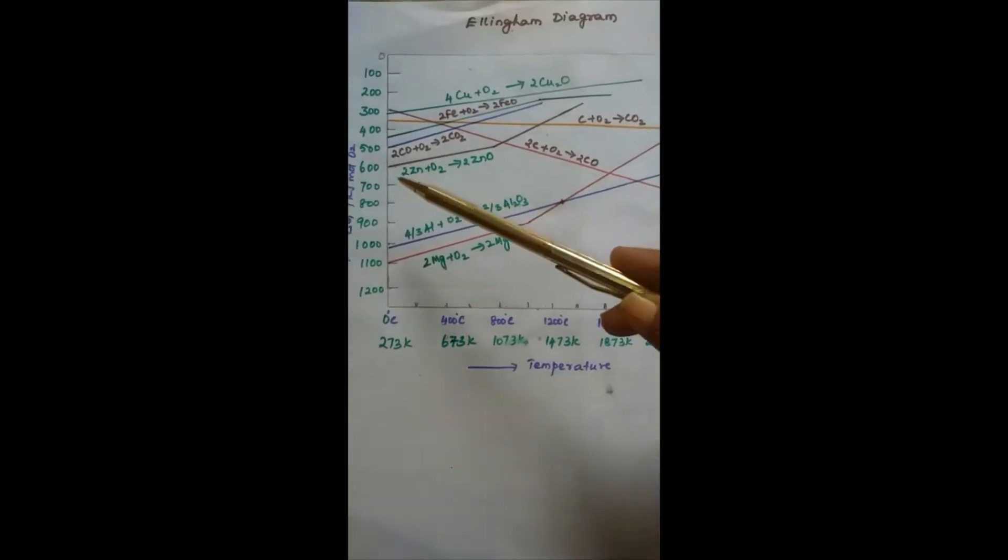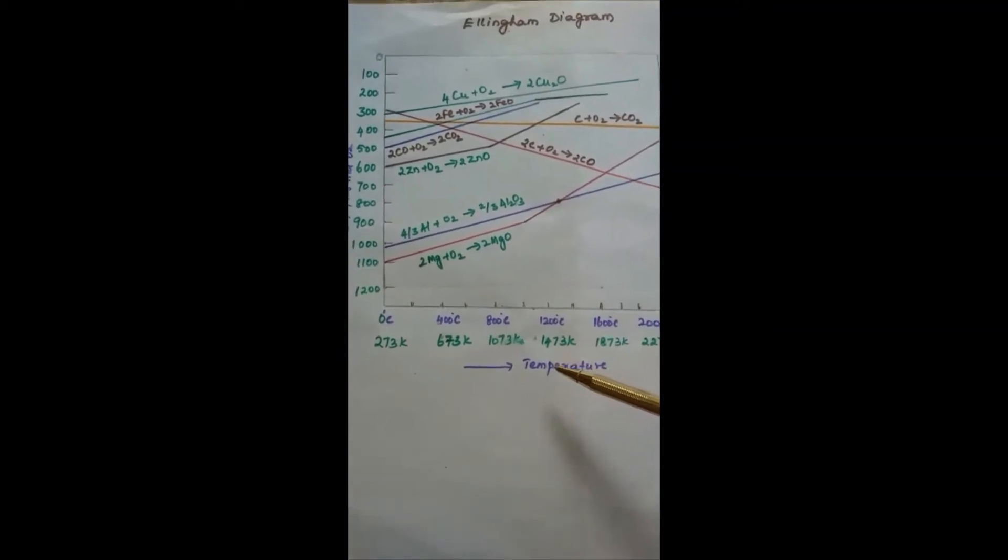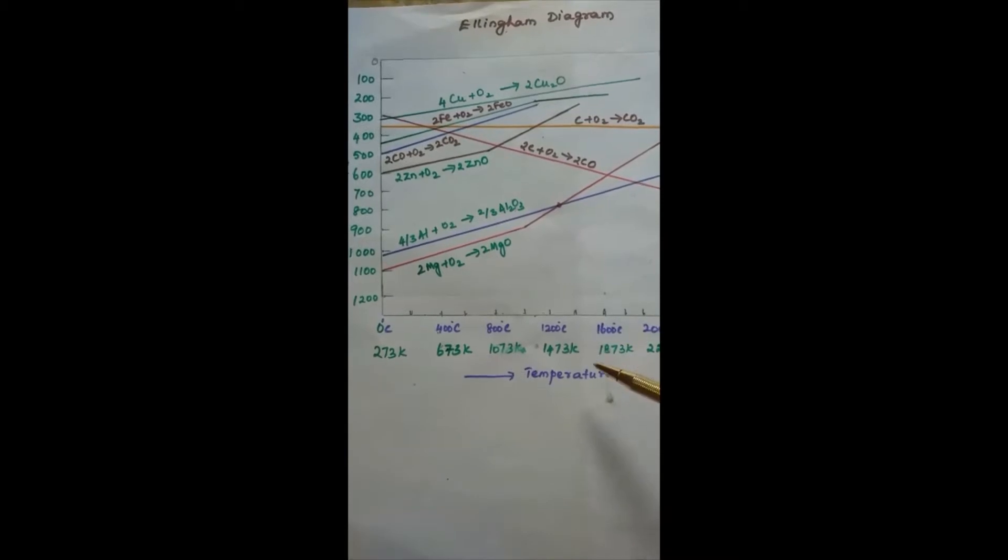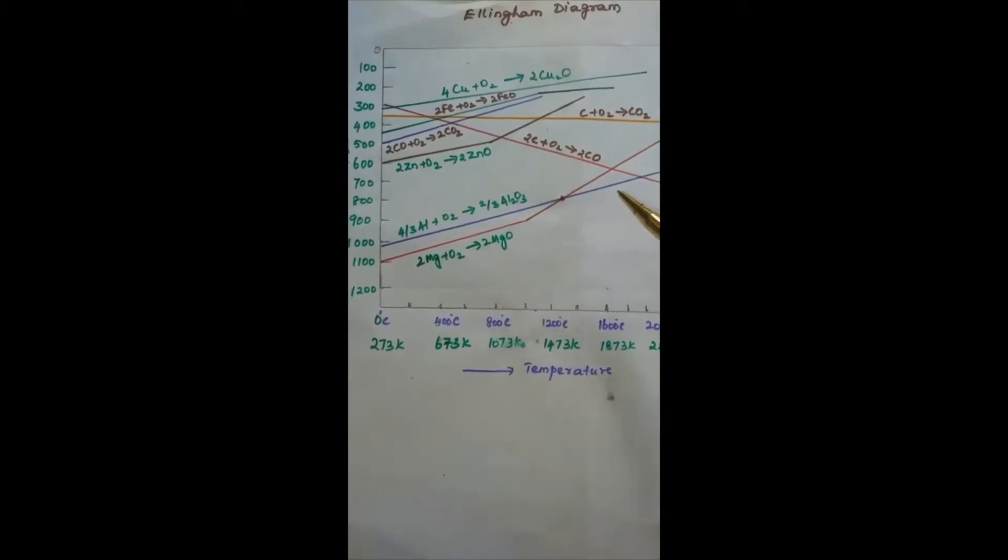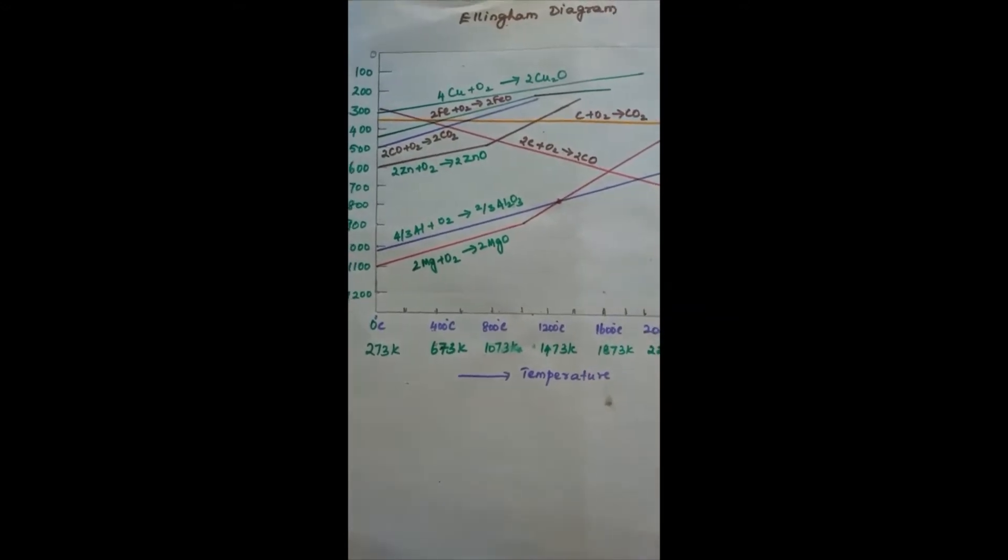It is nothing but a graph of delta G versus T, delta G versus T graph. It provides information for considering the choice of reducing agent in the reduction of oxides.